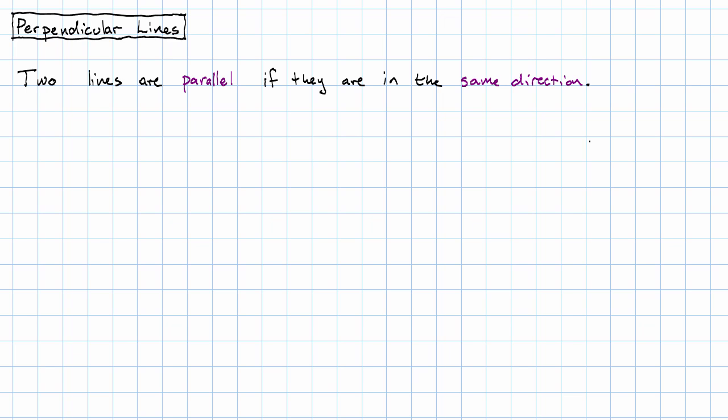What if they point not just in different directions, but in directions that are as different as they can possibly be? If two lines point in directions that are as different as possible, those lines are called perpendicular.